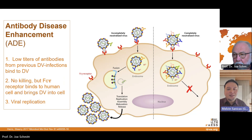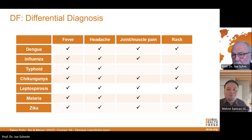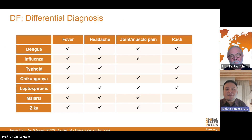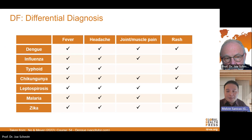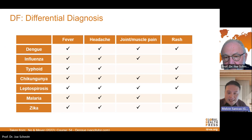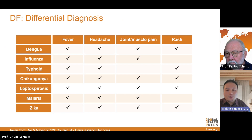Just looking at the signs and symptoms, it is difficult to have a definitive diagnosis of dengue. Other diseases with similar symptoms include malaria, influenza, Zika, chikungunya, measles, and yellow fever. So it is really important to obtain a detailed history of travel, exposure, and of course, testing.